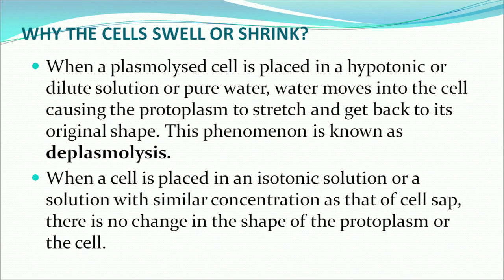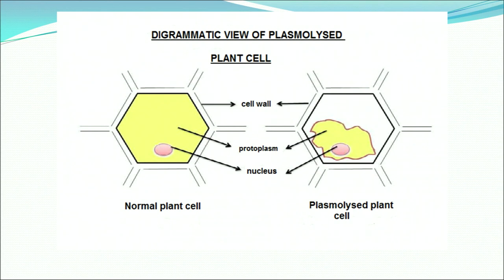When a plasmolysed cell is placed in a hypotonic or dilute solution of pure water, water moves into the cell causing the protoplasm to stretch and get back to its original shape — that is called deplasmolysis. When a cell is placed in isotonic solution, or a solution with similar concentration as that of the cell sap, no change in the shape of the protoplasm or the cell will take place. Plasmolysis is a process of shrinkage of the cell against the cell wall.